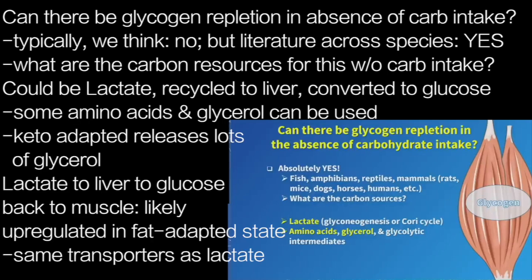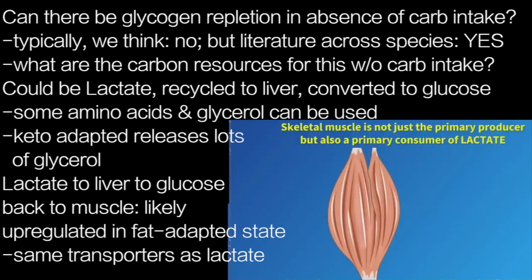What are the carbon sources for glycogen if it's not exogenous glucose? Well, it could be lactate — lactate can be recycled back to the liver and converted to glucose. Amino acids, some of which are gluconeogenic, can also be used as a source of glucose. And glycerol as well, with a lot of glycerol being released from adipose tissue in the keto-adapted state.